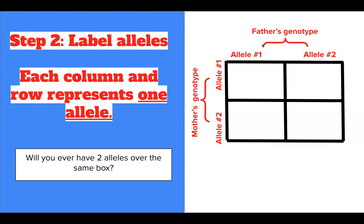When you break down the father's genotype, the first allele would be over this column, the left column, the second allele would be over the right column. When you break down the mother's genotype, her first allele would be to the left of this top row here, and her second allele would be to the left of this bottom row here.